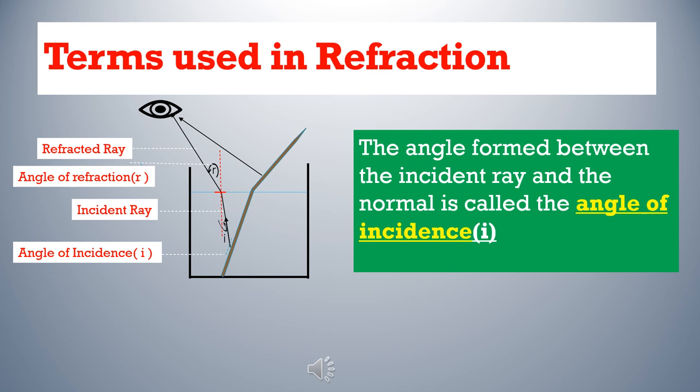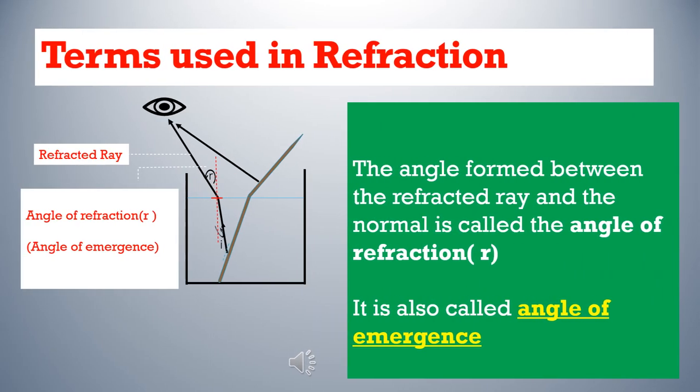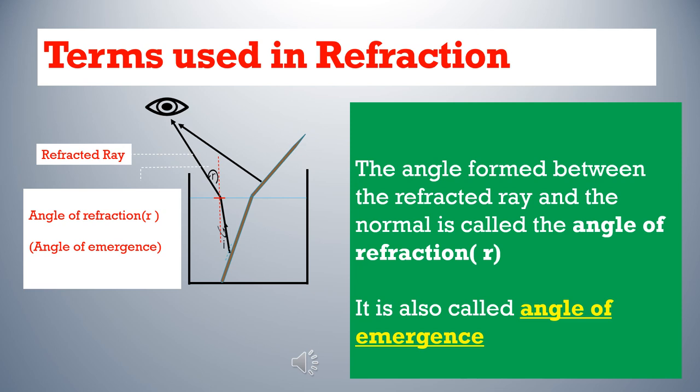In refraction also some important terms are there: incident ray, refracted ray, angle of incidence, and angle of refraction. The angle formed between the incident ray and the normal is called the angle of incidence. The angle formed between the refracted ray and the normal is called the angle of refraction. It is also called the angle of emergence, and it is represented by the letter R.